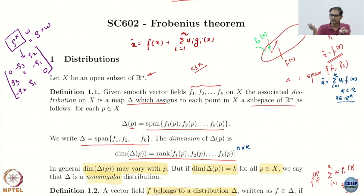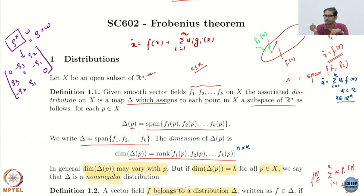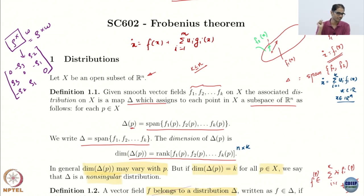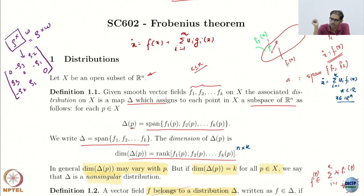Take a standard example: a car. You cannot instantaneously move orthogonal to the wheel — if your car is pointing forward with all wheels forward, you cannot instantaneously move sideways. That is a constraint of this system. So if you write the dynamics carefully and compute all the Fi's, you will find the distribution does not contain this orthogonal direction.